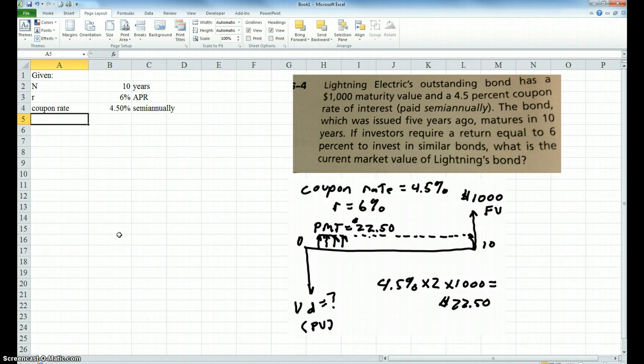We need the maturity value. They're going to give you $1,000 when the bond matures. Another word for that might be face value or par value. In chapter 4 terms, the time value of money, this is actually future value. That's the amount of money you're going to get in the future when the bond matures.